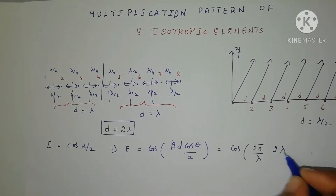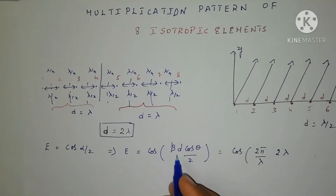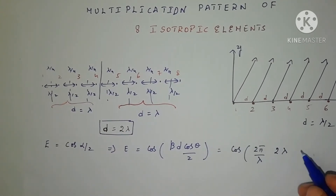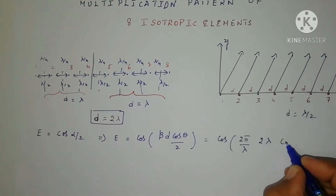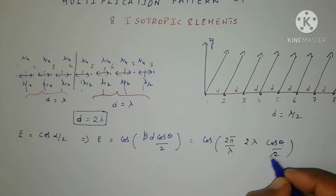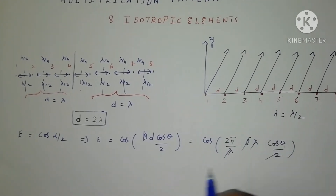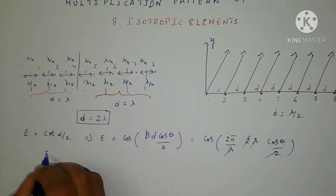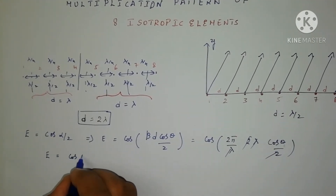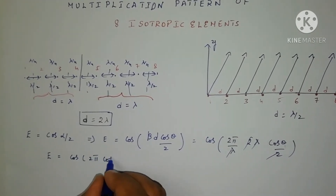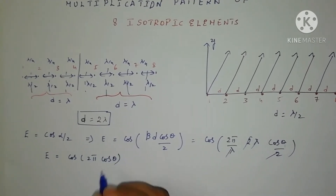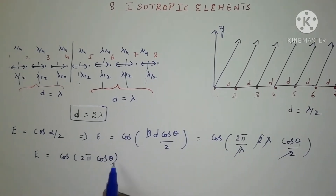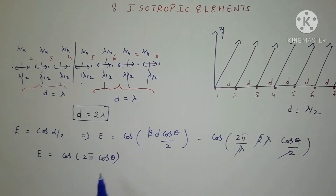In place of D we replace with 2 lambda. So we have beta D cos theta by 2, which becomes (2 pi by lambda) times 2 lambda times cos theta, all divided by 2. The 2's cancel and lambda cancels, leaving E equal to cos(2 pi cos theta). This is the equation I have obtained, and using this equation I will find out the group pattern.